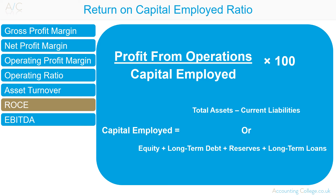To increase return on capital employed figures, an organisation can either increase profits by charging a higher price or reducing costs, or reduce its capital employed — for example, by repaying debts. Return on capital employed is easy to calculate and the figures used are readily available. However, although used by many external analysts and investors, return on capital employed has been shown to have a poor correlation with shareholders' value. Care must be taken to compare like with like, and results can be distorted by accounting policies or improved by cutting back on investments, which can lead to short-termism.